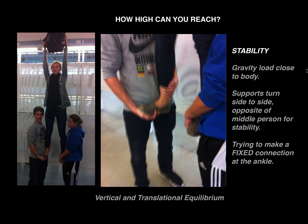Have them enact it, document it, then go back and decode: why did you do what you did? Why did you two turn in the middle and face the person you're supporting? Because it was easier and more stable — but why geometrically? Why did you hold that person's feet that way? Why are you trying to make a fixed connection and how does that help? Ultimately you can reach a basic understanding of both vertical and translational equilibrium — they're not going up or down, and not going side to side.